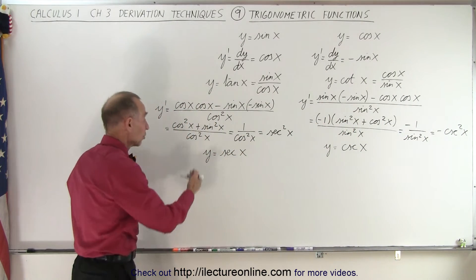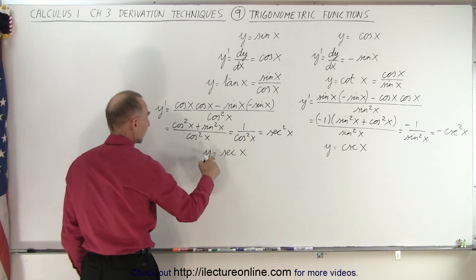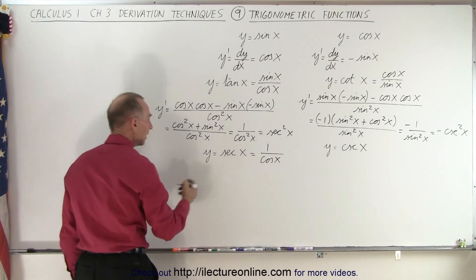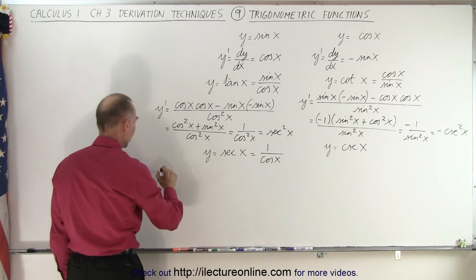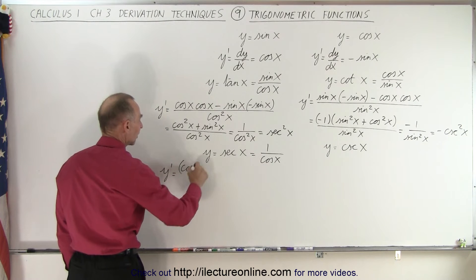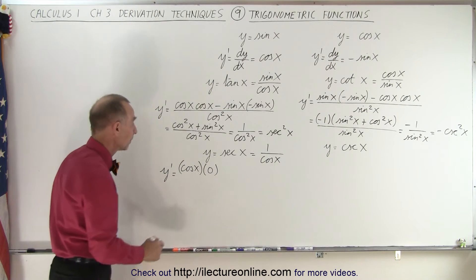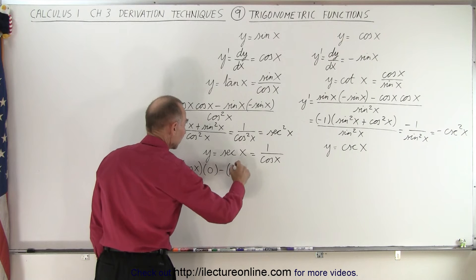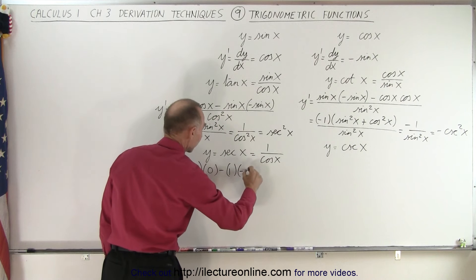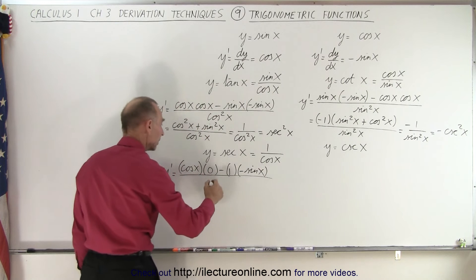When we take the derivative of the secant and the cosecant, we use the same technique. We write the secant as one over the cosine of x, then use the quotient rule: y prime equals the denominator, the cosine of x, times the derivative of the numerator — that's a constant, so the derivative is zero — minus the numerator times the derivative of the denominator. The derivative of the cosine of x is the negative sine of x. We divide all that by the denominator squared.